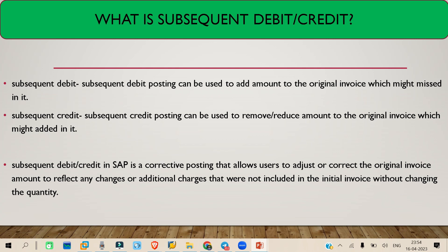In that subsequent debit document, you can add some extra price or extra amount to the original invoice. So subsequent debit means adding some price to the original invoice without changing the quantity — the quantity will not be changed, you are only adding some price to the original invoice.